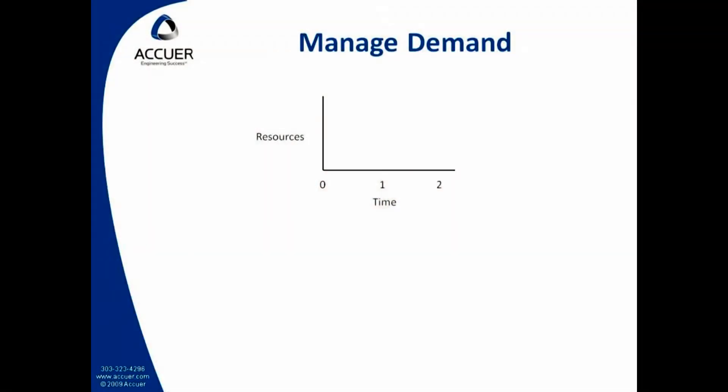Our second option is called managed demand. This is exactly what manufacturing is doing when they're limiting their workload to 80% of their maximum potential. But what would that look like in product development? Most of you have more than one project in product development right now. In fact, your project load might look something like this. The resources axis is on the left — it's the people and money you have available. Along the bottom axis is time, which can be in months, quarters, or years. Let's say this company is working on four projects at once.